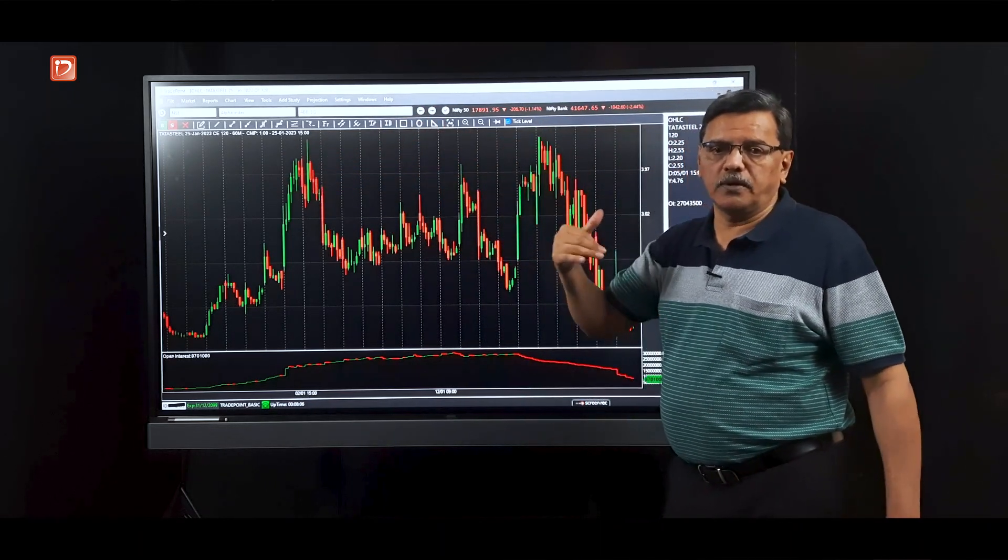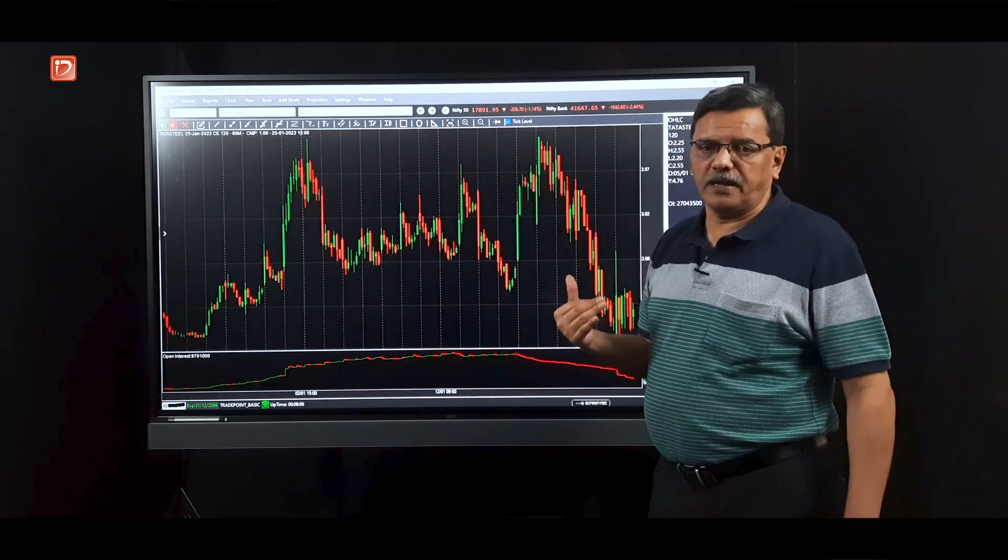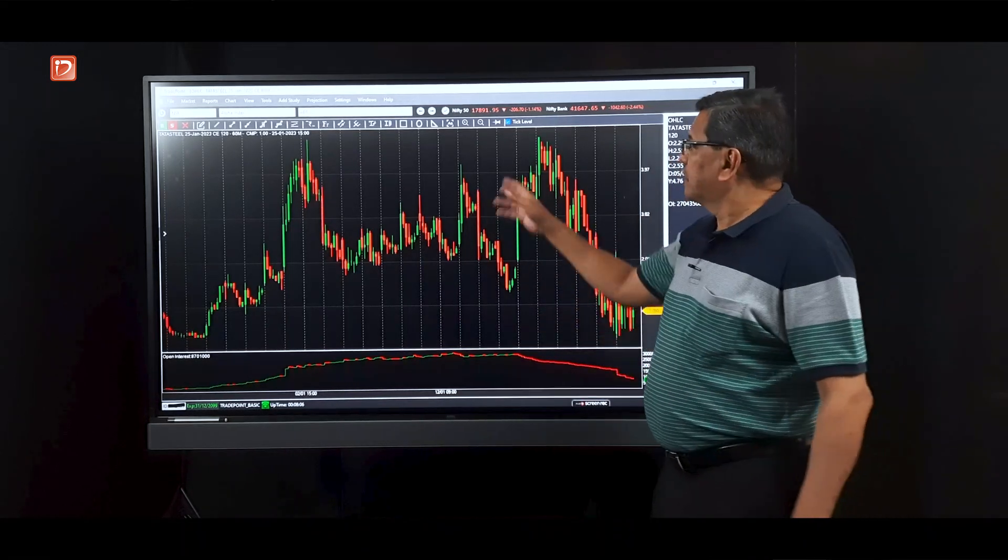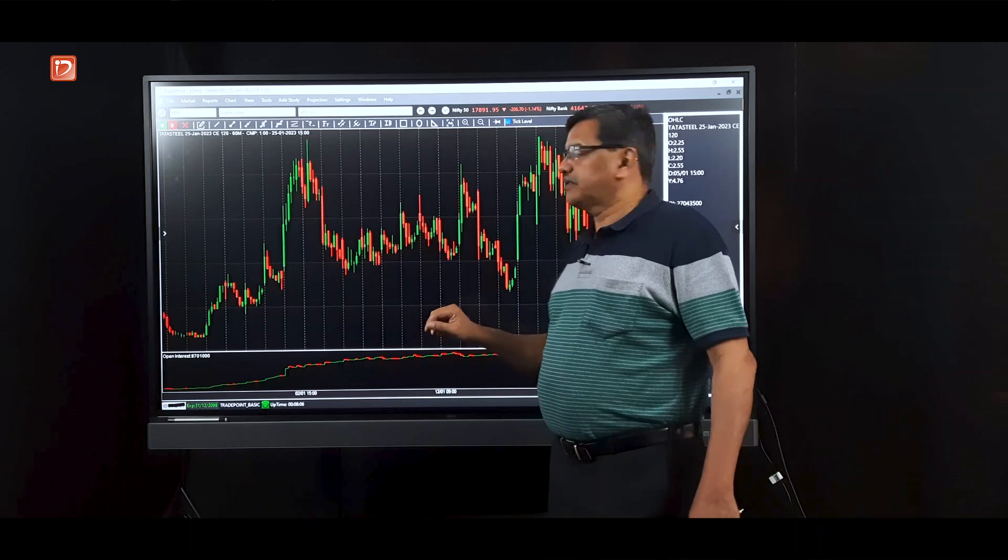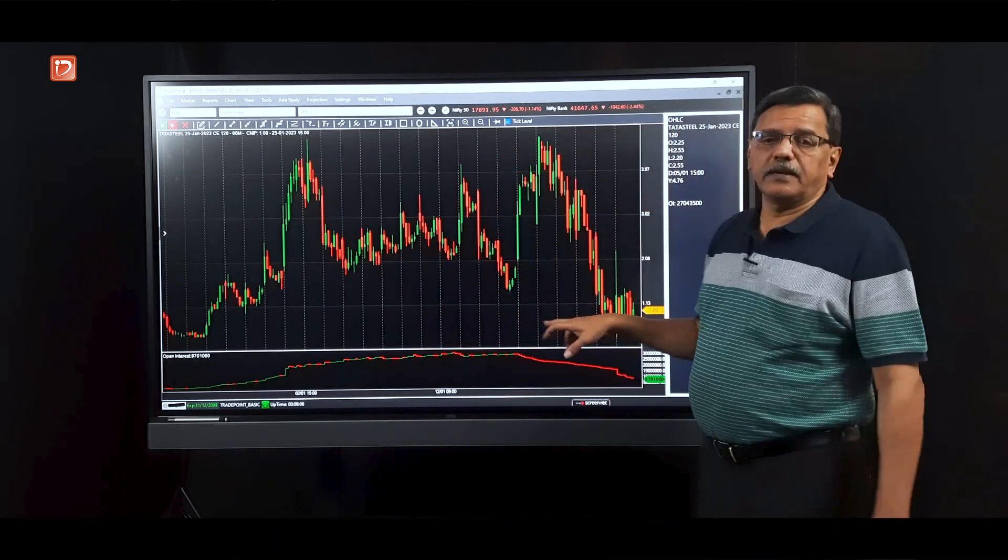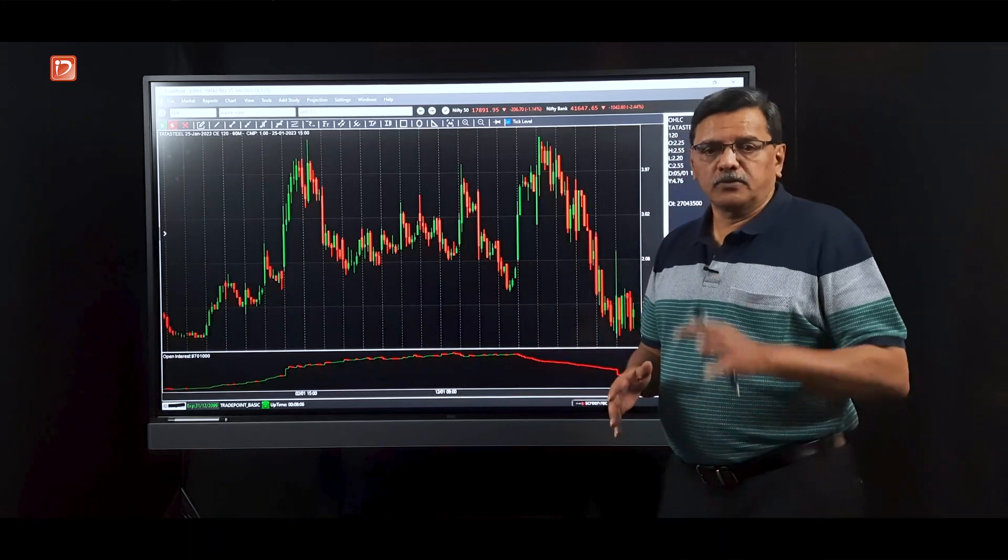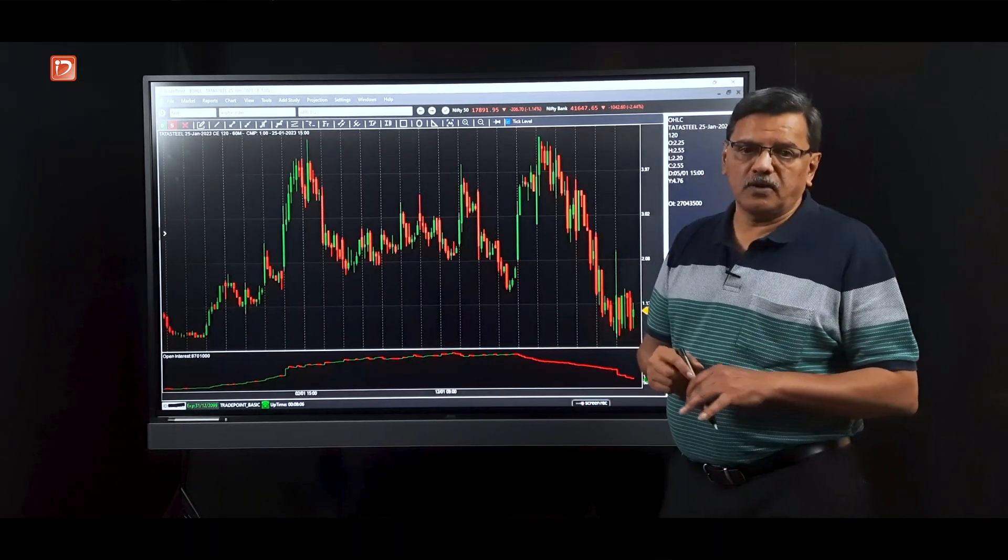So that was a good hint that though the covering is happening and though the put writers are not showing strength, the call is not crossing this previous high. And after that it closed again. In fact, Tata Steel has expired at 121, so it remained near at 120.